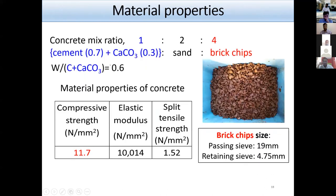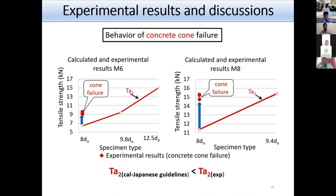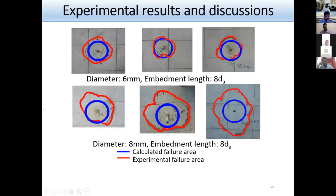The compressive strength was 11.7 MPa and the elastic modulus of concrete was also low. Two types of failure — concrete cone failure and steel fracture — were observed. From the graph, the straight line represents the calculated strength by the Japanese guideline and the red circles show experimental results. Concrete cone failure occurred at a higher level than predicted, because the calculated failure area was smaller than the actual experimental failure area.